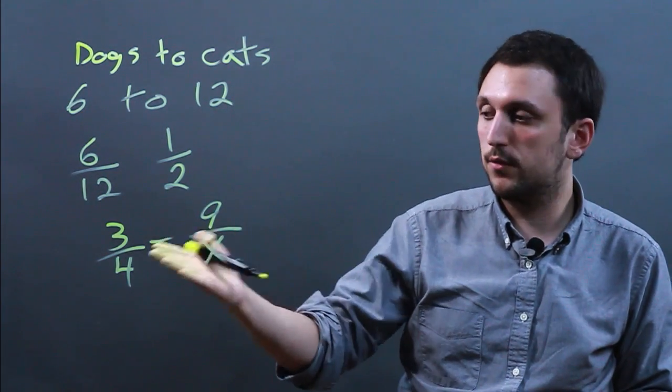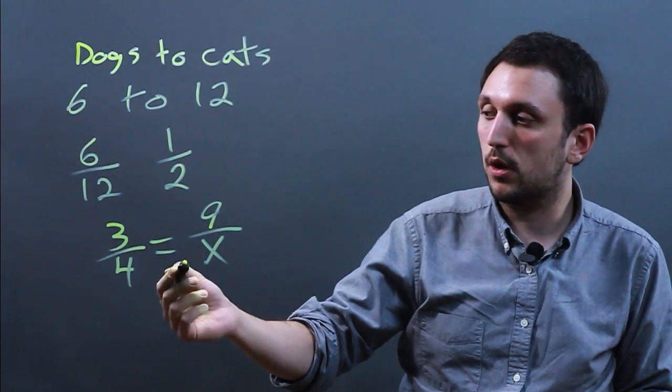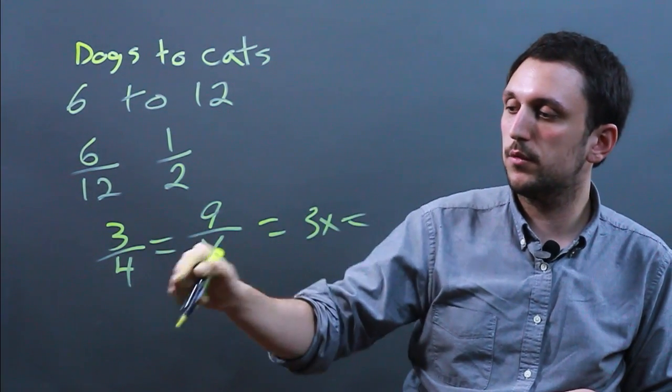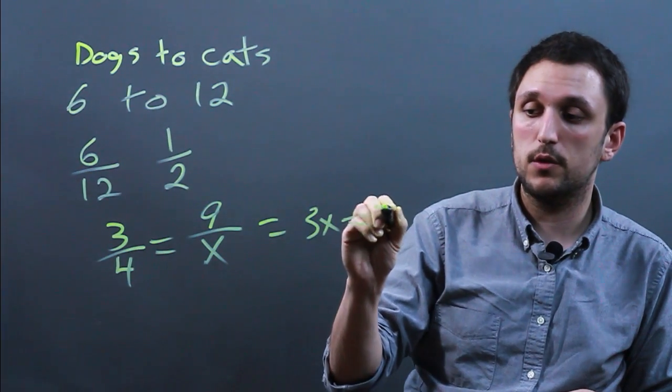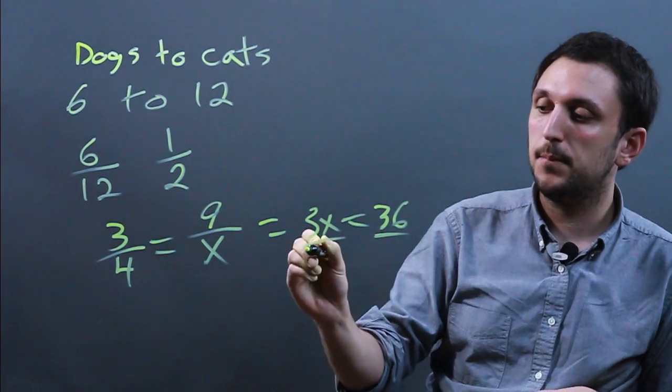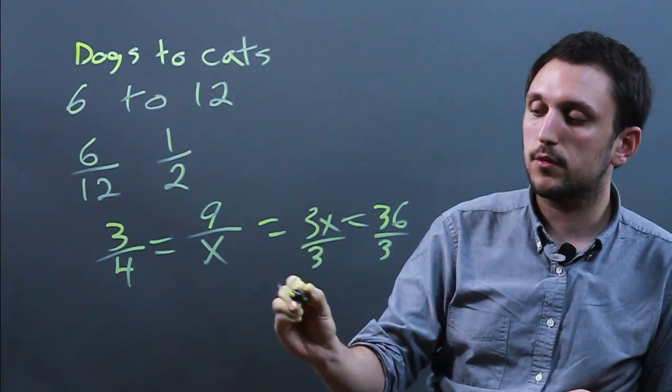The other way you would sort of simplify this or solve it would be to cross multiply. So x times 3 equals 3x equals 9 times 4 is 36. So 3x equals 36 divided by 3 and you get x equals 12.